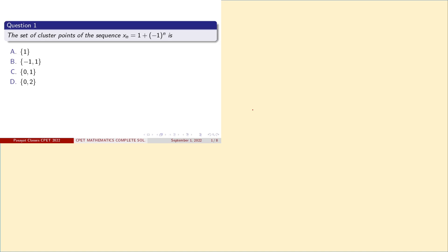This is question number 1. The set of cluster points of the sequence Xn is equal to 1 plus (-1) to the power n. So Xn is equal to 1 plus (-1) to the power n.